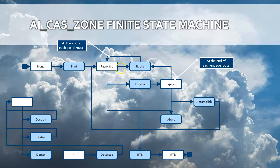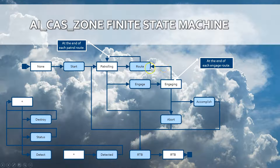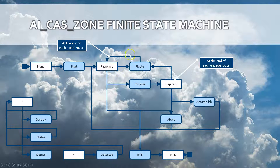Let me go quickly through this process so that you'll understand later on when I go through the different diagrams explaining the process in a more visual way. An AI CAS Zone class lets an AI patrol in a zone, and the patrolling is done repeatedly.